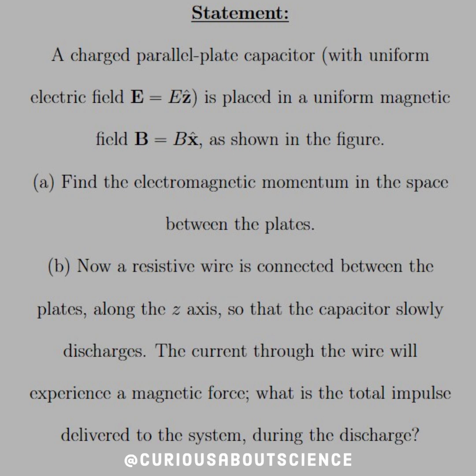A charged parallel plate capacitor with uniform electric field E = Eẑ is placed in a uniform magnetic field B = Bx̂ as shown in the figure. Part A: Find the electromagnetic momentum in the space between the plates.